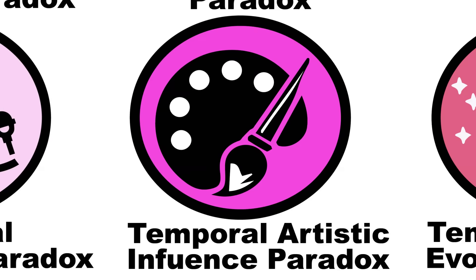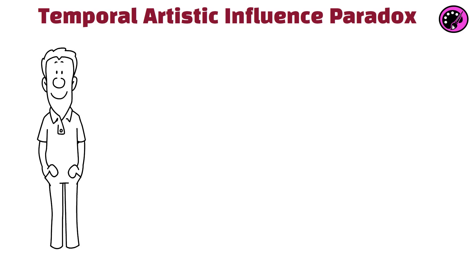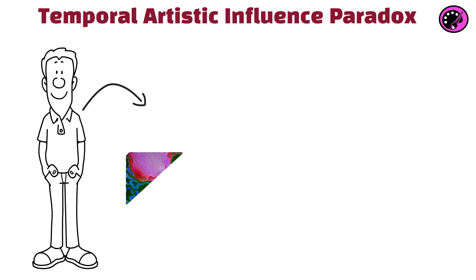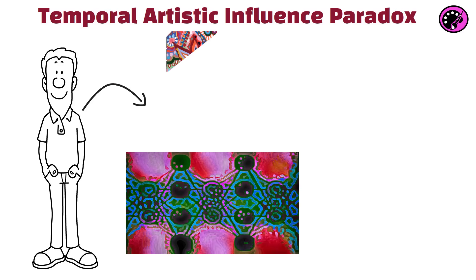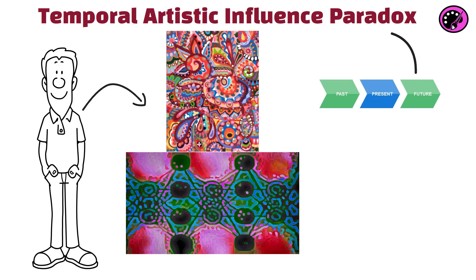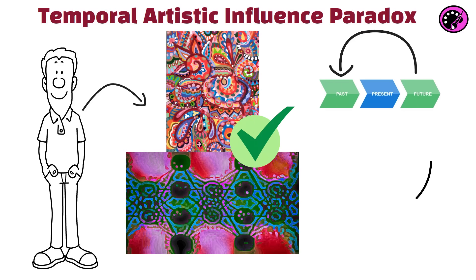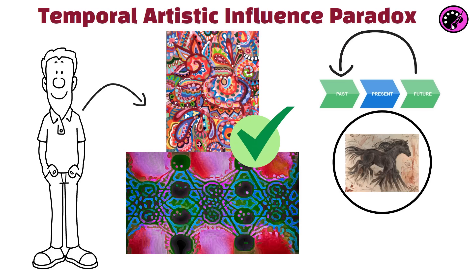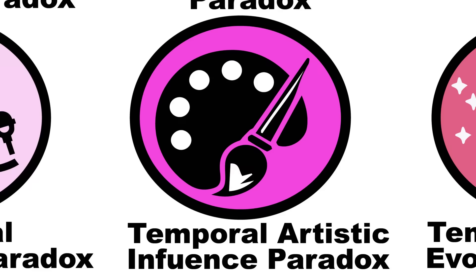The temporal artistic influence paradox occurs when a time traveler introduces artistic styles or works from the future to the past. If these introductions significantly influenced the development of art, it could prevent the future artistic movements that inspired them from ever occurring, creating a loop of artistic influence with no clear origins.